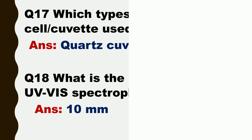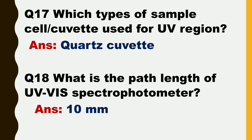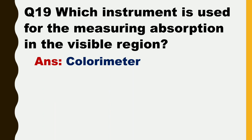Next question is: which type of sample cell or cuvette is used for the UV region? The answer is quartz cuvette. Next question is: what is the path length of UV visible spectrophotometer? The answer is 10 mm.